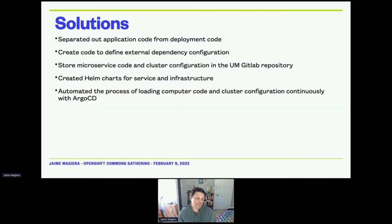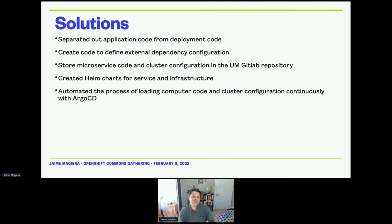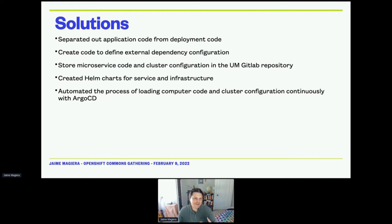The solutions in a general sense: we separated out our application code from the deployment code. We created code to define external dependency configuration. We stored the microservice code and cluster configuration in the University of Michigan's GitLab repository. We created Helm charts for the services and for the infrastructure configuration. And we automated the process of loading computer code and cluster configuration continuously with Argo CD.